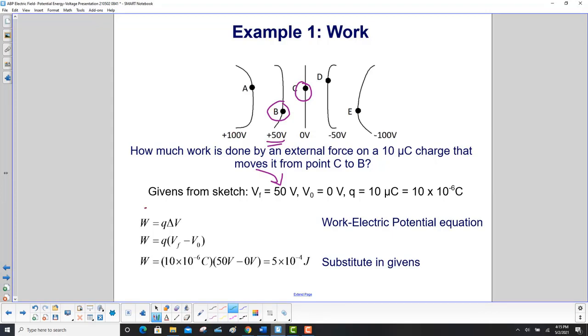We start with our work electric potential equation. We put in the value of Q. Here is V final. Here is V initial. And we get 5 times 10 to the minus 4th joules. We are doing positive work, which makes sense because we are going from 0 to 50 volts, to a higher voltage.